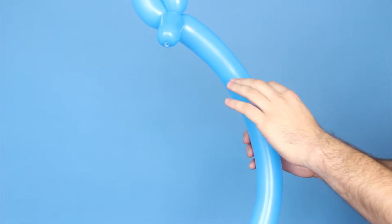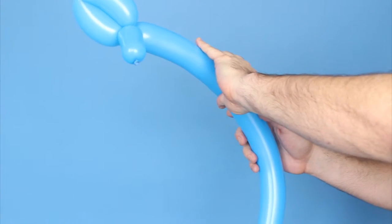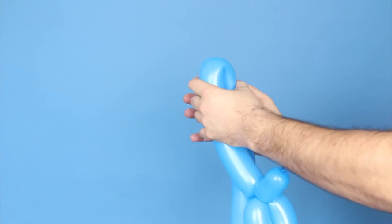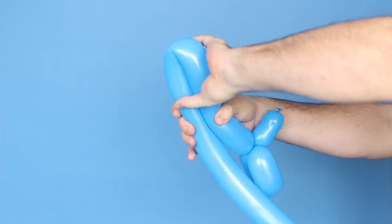Next, we're going to make the feet. Grab the balloon about a foot lower, bend the balloon to create the front legs, and then twist.